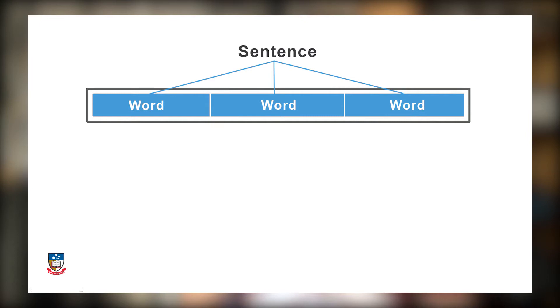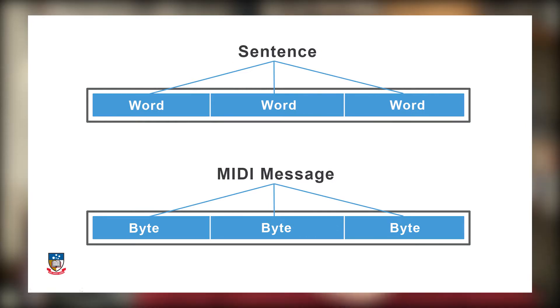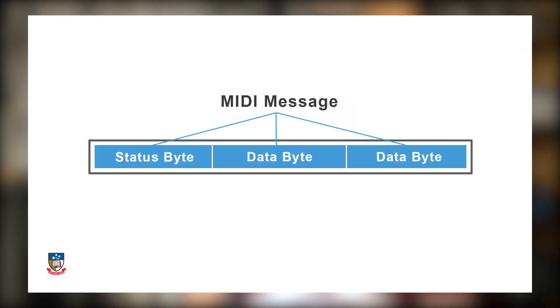The MIDI communication system is like a language consisting of sentences made up of words. In the case of MIDI, the sentences are called messages and messages are made up of words called bytes. A message is made up of at least one or more bytes, but commonly you will find messages made up of three bytes. Types of bytes exist: a status byte telling us what the message is going to do, and a data byte, usually telling us how or how much of something to do.